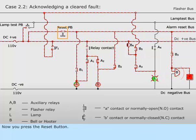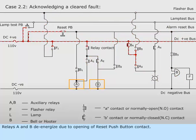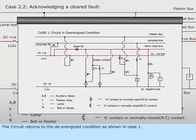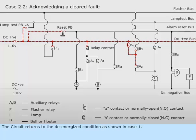Now you press the reset button. Relays A and B de-energize due to opening of reset push button contact. The circuit returns to the de-energized condition as shown in Case 1. Bell stops sounding and lamp goes off.